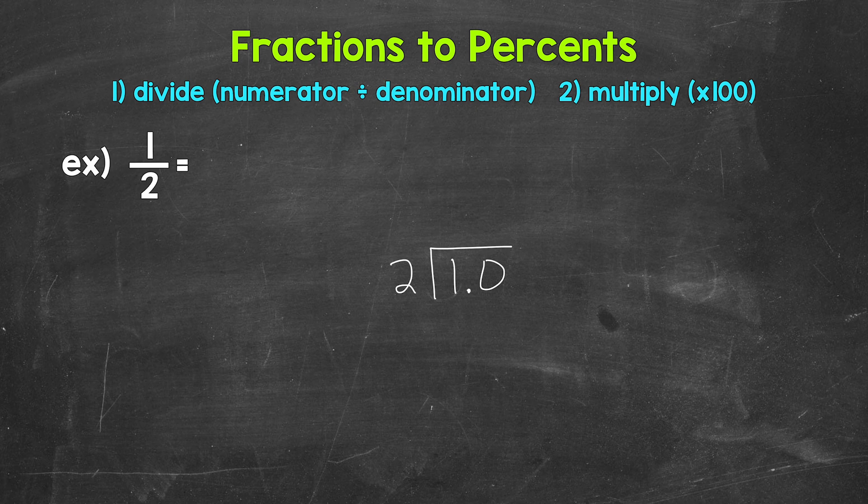Once we have the decimal and the zero, we can bring the decimal straight up into where the quotient, the answer, will be. Now we can think of this as 10 divided by two. So 10 divided by two is five. So we put the five up here above the zero. Now make sure that five is above the zero, since we used that zero and thought of this as 10 divided by two. And that's going to line us up correctly.